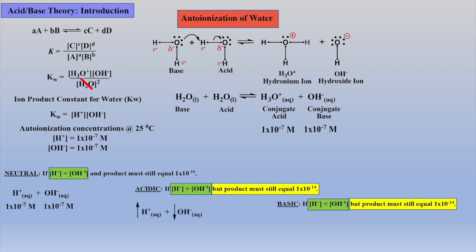Thus, in acidic solutions, the proton concentration goes up and the hydroxide concentration goes down, and in basic solutions, the hydroxide ion concentration goes up and the proton concentration goes down, so that their products are always 1 times 10 to the minus 14.